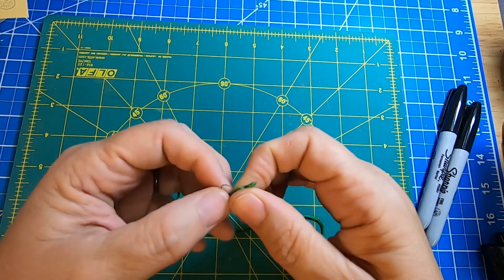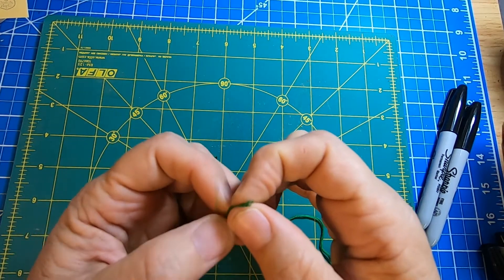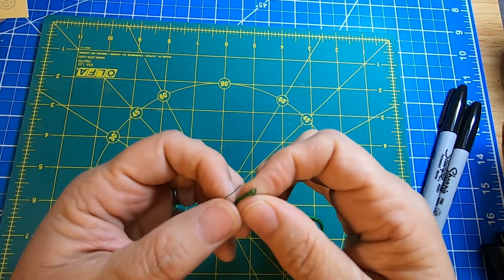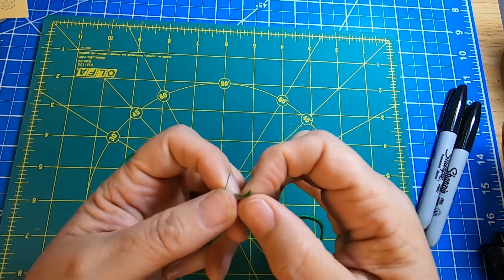I'm using a length of floss that is about 18 inches. That's a good length to use, as much longer and you'll find problems with tangling.